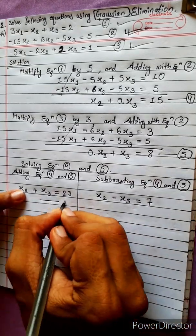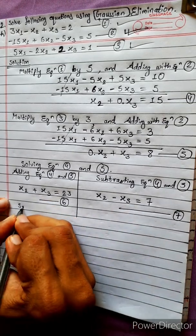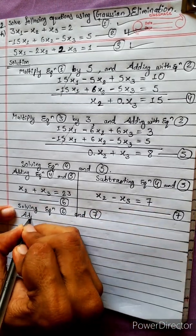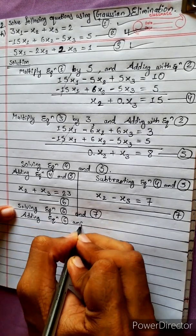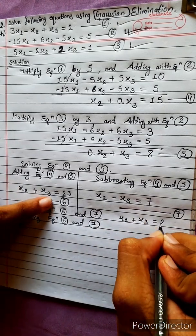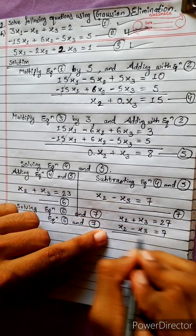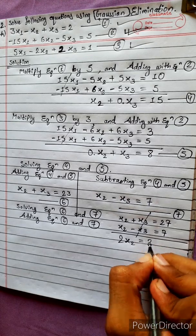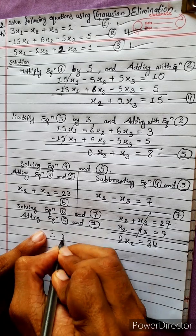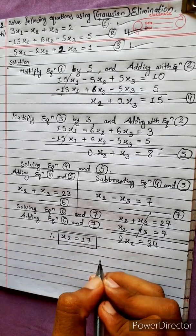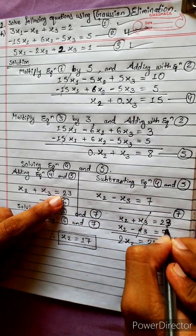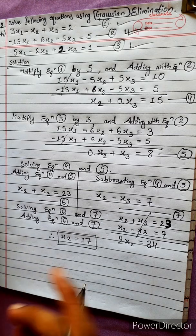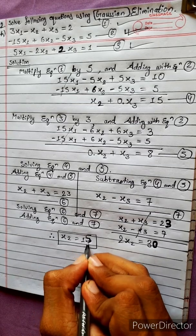Call these equation 6 and equation 7. Adding equations 6 and 7: x2 plus x3 equals 23, x2 minus x3 equals 7. Adding gives 2x2 equals 30. Wait — I mistakenly wrote 27 here; the correct value is 23. So 23 plus 7 equals 30, and 30 divided by 2 equals 15.